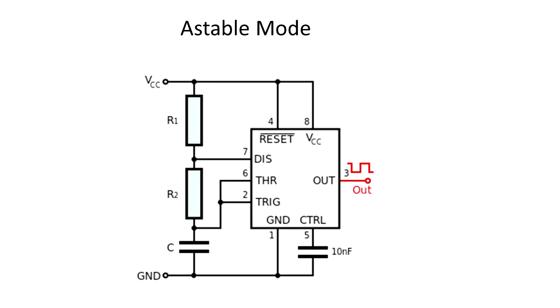Mode number one: astable mode. This mode is used to generate square waves of various frequencies and various duty cycles. Just by changing the value of R1, R2, and C, we can get a wide range of time periods and duty cycles.